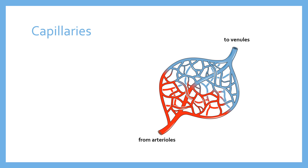These arterioles flow into a dense capillary network — sometimes called a capillary bed — embedded in the tissue. For the lungs that means within and around the alveoli, and for the muscles it's embedded through and around the muscle tissue, giving maximum opportunity for oxygen to be diffused into the tissue or picked up, and for carbon dioxide to be exchanged.